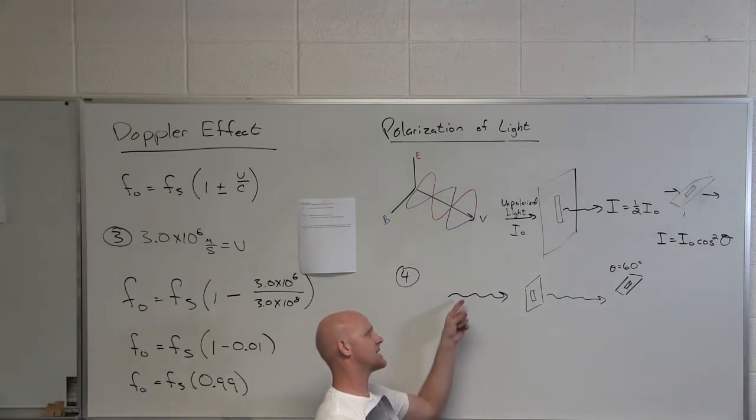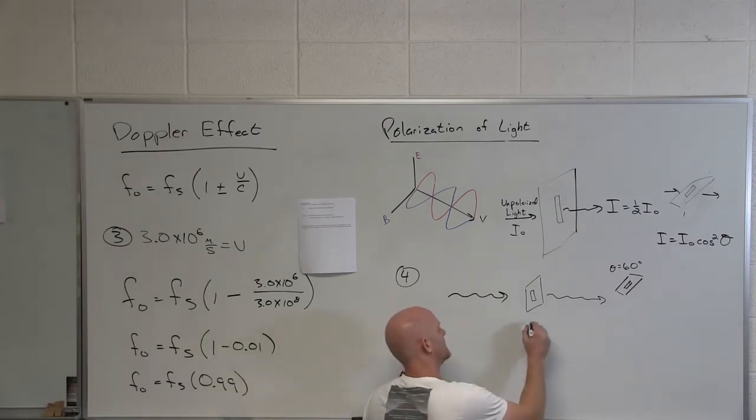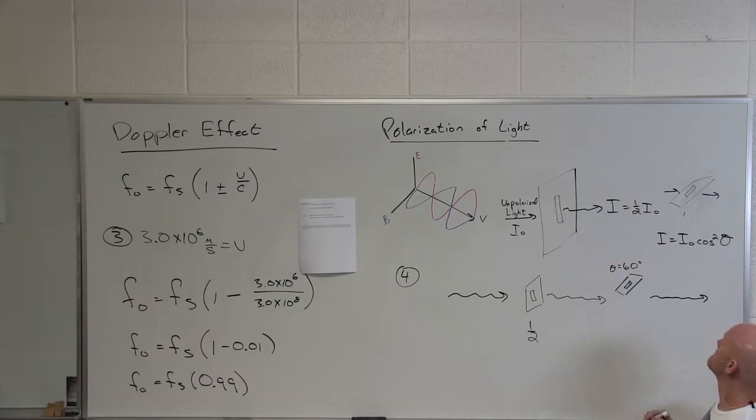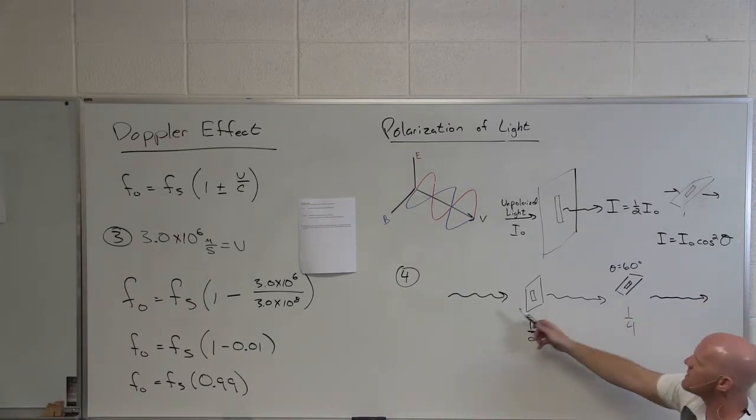So first part is what fraction of the unpolarized light makes it through the first filter? One-half. The next question is then what fraction of that makes it through the last filter? Well in this case it's going to be cosine squared theta. What is the cosine of 60? One-half. What's the cosine of 60 squared? One-fourth.